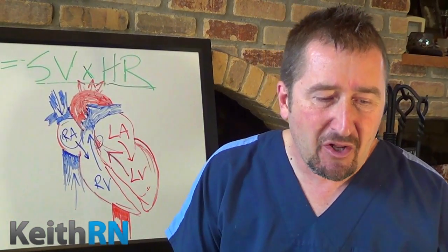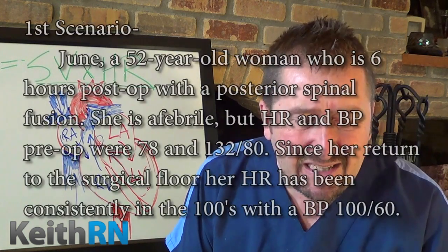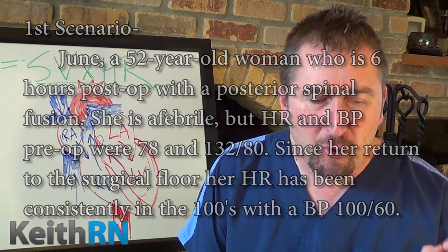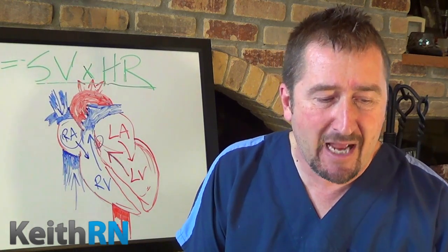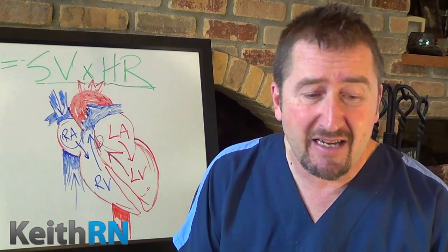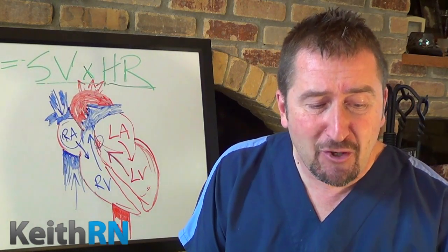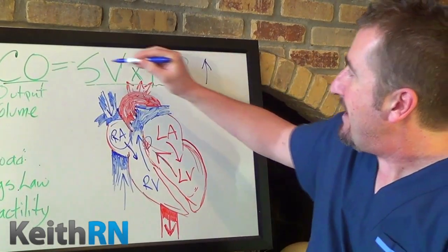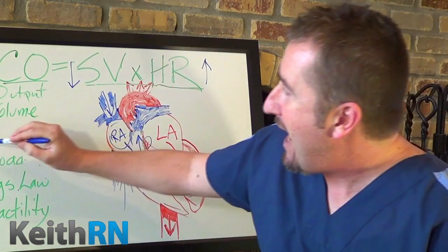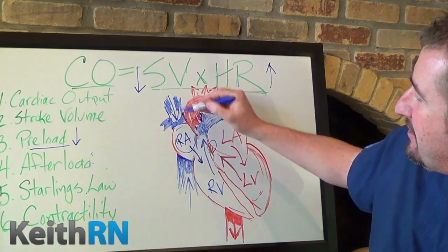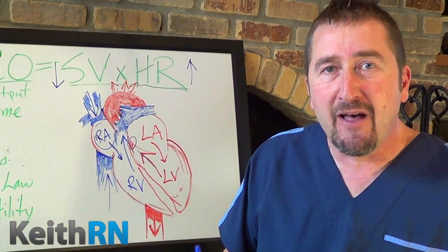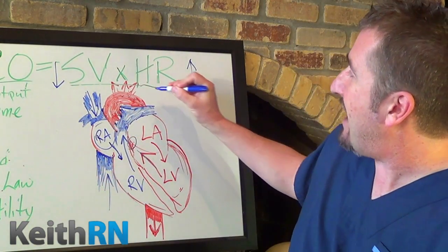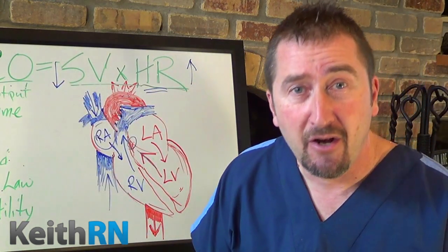Looking at our first scenario — why is there an elevation of heart rate with a lower blood pressure? Though sepsis is possible, it is unlikely because of the short time frame after surgery and the normal temperature. The most common and likely explanation early post-op is that the patient has a fluid volume deficit and is dehydrated. This is causing an elevation in heart rate because of lower stroke volumes related to a decrease in preload — what's coming to the right side of the heart. The body compensates by increasing heart rate to maintain adequate cardiac output.